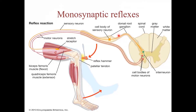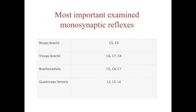An example of a monosynaptic reflex is the stretch reflex. The stimulus is a sudden stretch of a tendon, which triggers the stretch receptor in the muscles, sending signals through the afferent or sensory neuron to the dorsal root ganglion and the posterior horn cells. Then the anterior horn cells send signals through the efferent neuron to the stretched muscle, leading to its contraction. Some of the most important examined monosynaptic reflexes are biceps, triceps, brachioradialis, and quadriceps femoris reflexes.